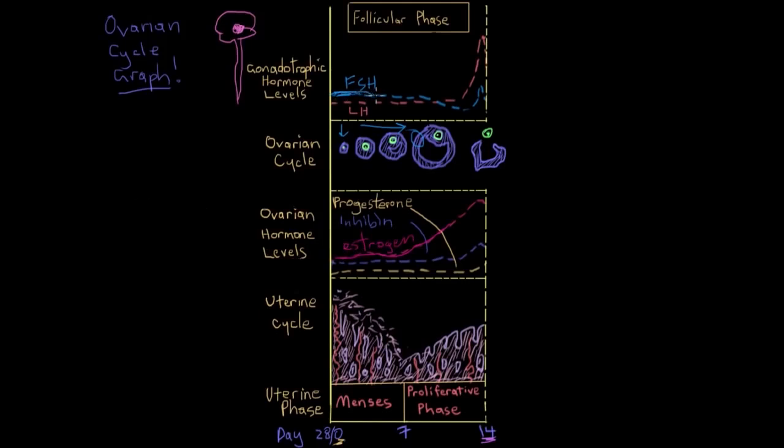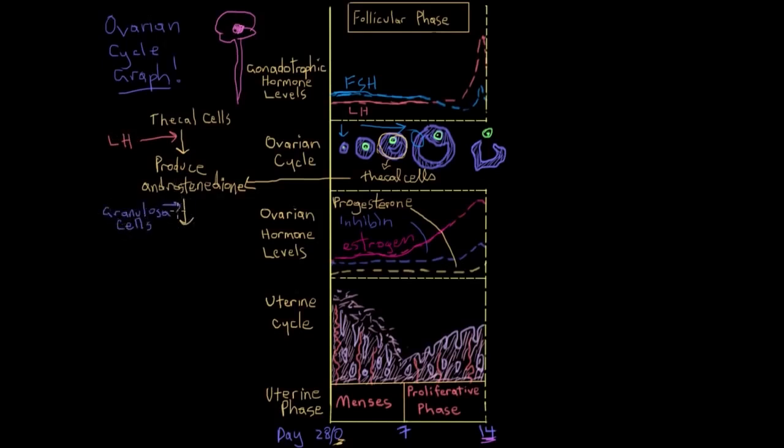So the amount of estrogen in the blood is going up and up and up as these follicles grow. And to add to that, besides what FSH is doing, luteinizing hormone is making the thecal cells that surround the follicle produce a hormone called androstenedione. Androstenedione is really similar in structure to estrogen. And actually, the granulosa cells get a hold of that androstenedione and convert it to actual estrogen. So the estrogen levels are just going way up. And you can see that reflected here.